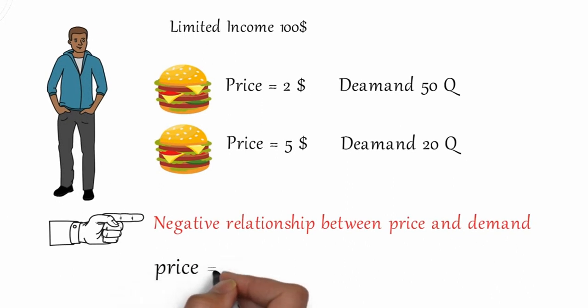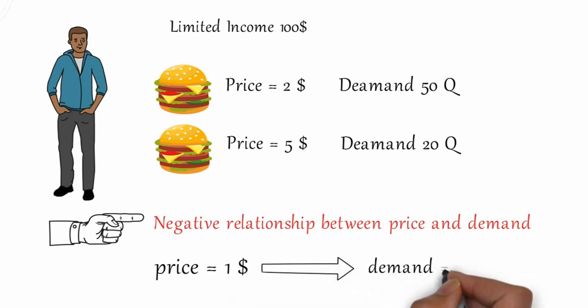Just think another way. If the price of a cheeseburger reduces to $1, then what will happen? Alex can buy 100 cheeseburgers.